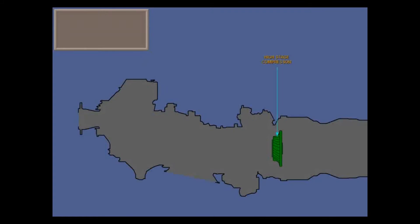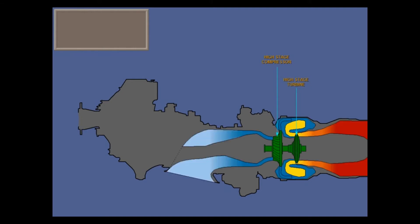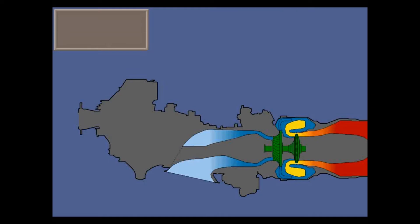Connect a high-stage centrifugal compressor by a shaft directly to a turbine, also called a high-pressure spool. When fuel is burned by 12 fuel nozzles in an annular reverse-flow combustion chamber, hot gases accelerate to the exhaust at the rear of the nacelle. What we have here is a basic jet engine.